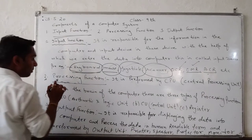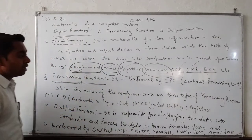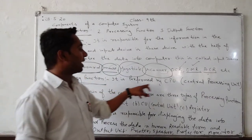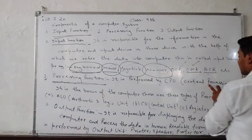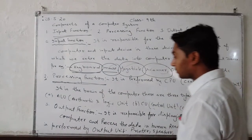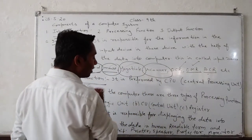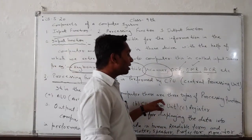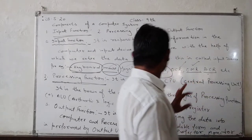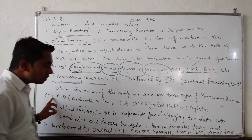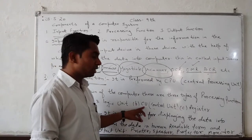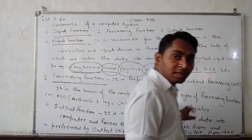Second, processing function. It is performed by the CPU and CPU is a full form central processing engine. It is the brain of the computer and there are three types of processing function. First, ALU. Second, CU. Third, register.